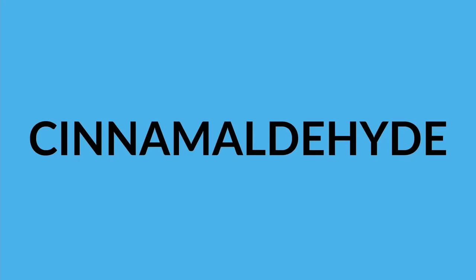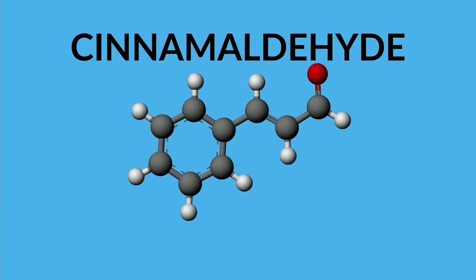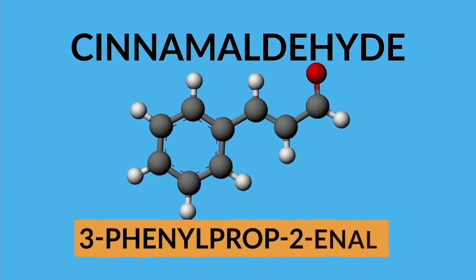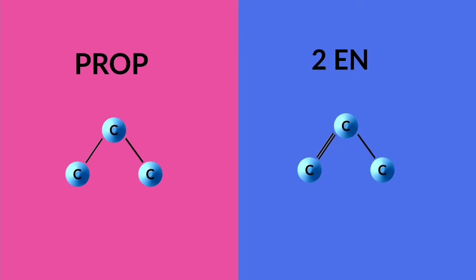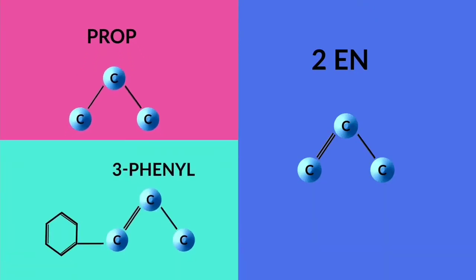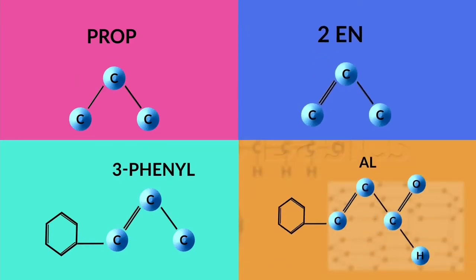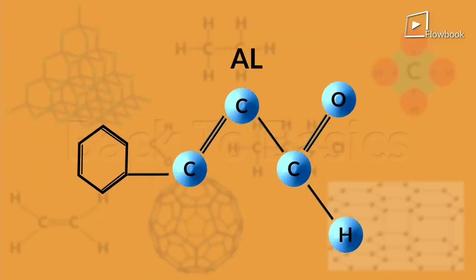Let's use the example of cinnamaldehyde — its name is 3-phenyl prop-2-enal. It says prop, so there are three carbons. It has a phenyl and an aldehyde group, so according to the preference list the suffix will be AL. The 2-en tells us there is a double bond on the second carbon, and the 3-phenyl tells us there is a phenyl group on the third carbon. Because of the AL, we attach an aldehyde like this.